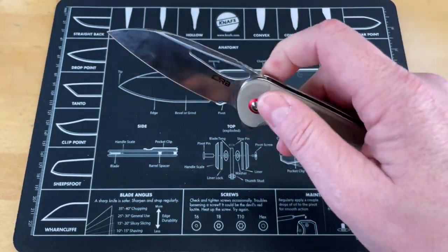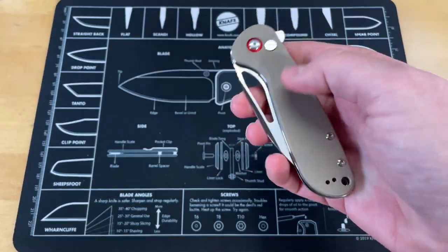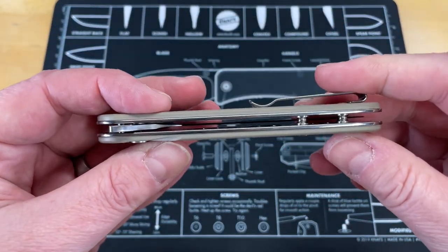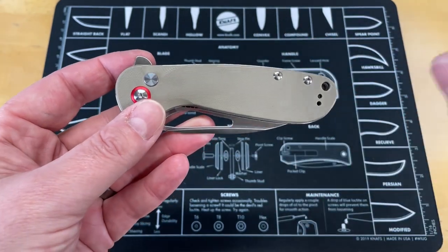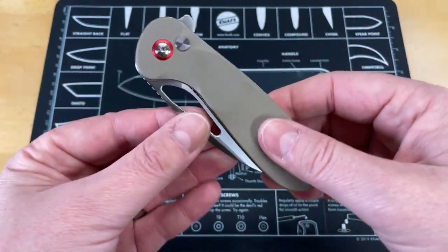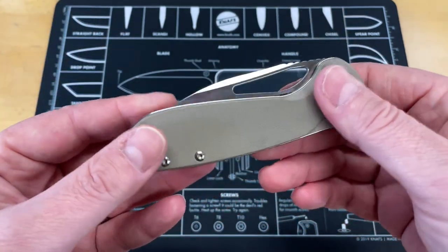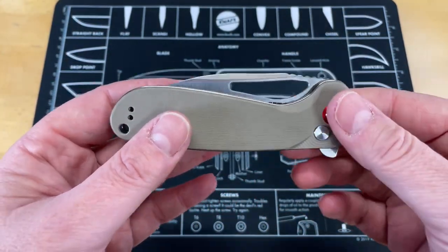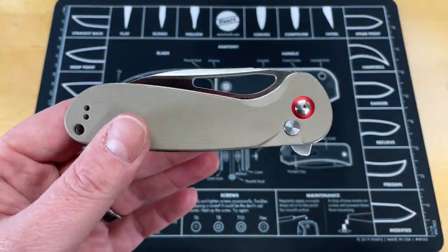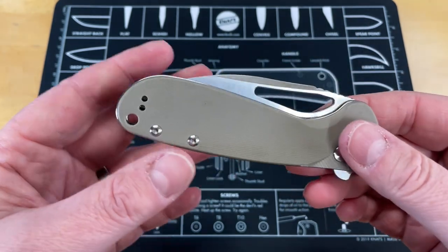G10 handles on these, they come in multiple colors. There's an all black version, a black scale with satin blade, and a lot of different versions. Coming in at $49 on Artisan Cutlery's website. I'll have links to all these knives down below.